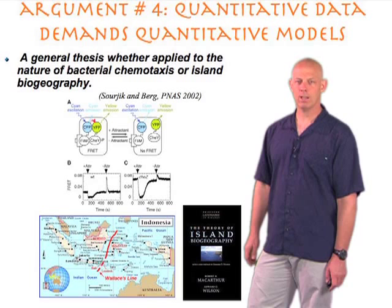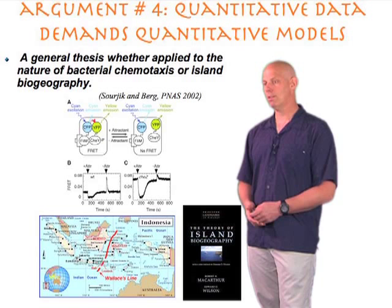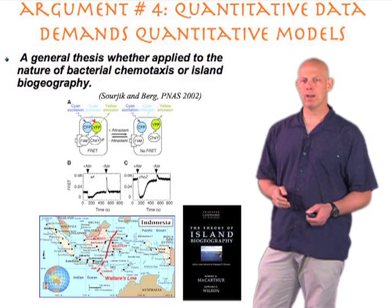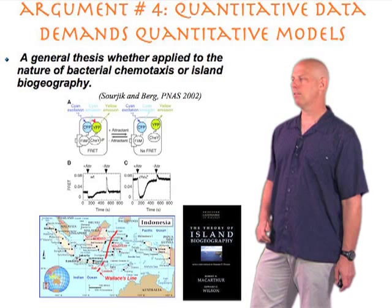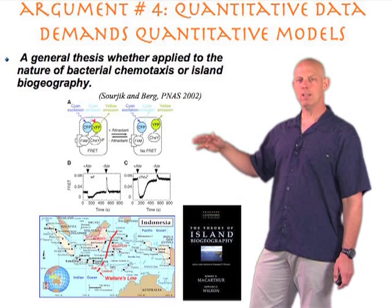Most of us know, for example, that in Australia there are marsupials — the kind of thing that Wallace noticed. In the modern hands of Robert MacArthur and E.O. Wilson, this led to what they call the theory of island biogeography. One of the coolest things in their book is a simple empirical relationship relating species diversity to the area of islands. They proposed a simple mathematical equilibrium model balancing the rate of immigration against the rate of extinction, leading to a picture of the species-area relationship.